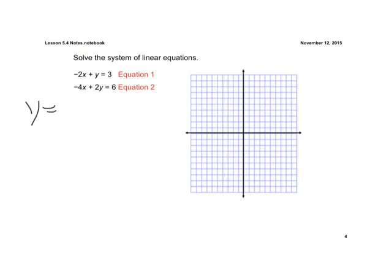So y equals, we're going to move our 2x to the other side, add 2x. When we do that, we're left with 2x plus 3. That's our first equation.